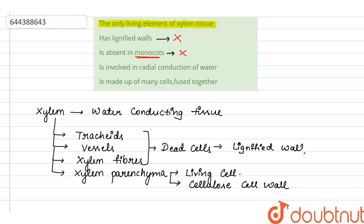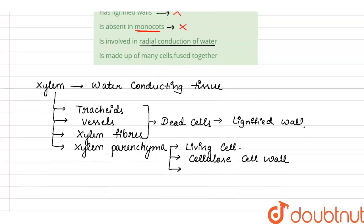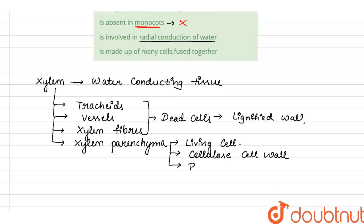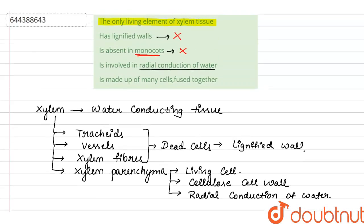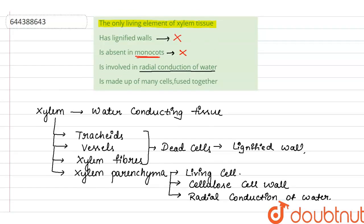Third statement is 'involved in radial conduction of water.' The main function of xylem parenchyma is it helps in both storage of food and radial conduction of water. Radial conduction means sideway conduction. So third statement is correct.